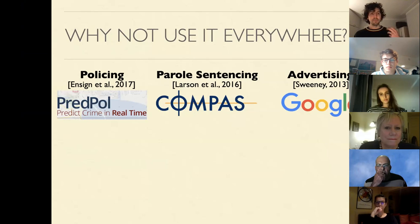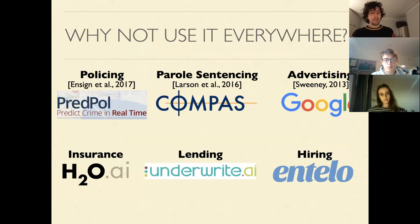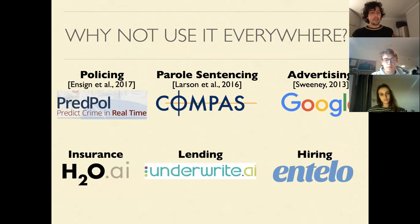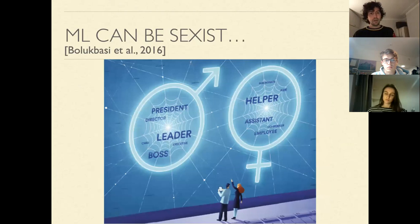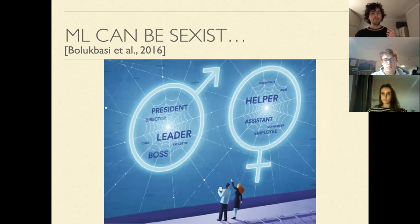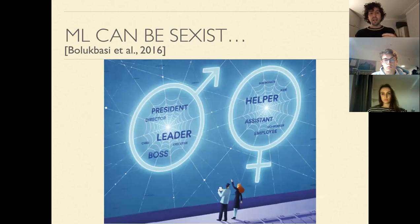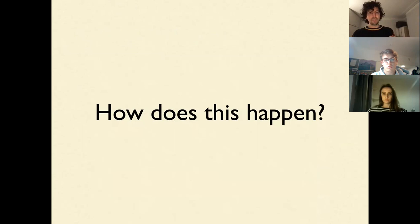So the natural question is: why not use machine learning everywhere — in policing, advertising, insurance, and lending? Well, as we've been talking about, it's because machine learning algorithms can be racist. A classic example is an HP face detection algorithm that could recognise the faces of white people while being unable to recognise the faces of black people. It can also be sexist — Bolukbasi et al. demonstrated natural associations in natural language processing methods where men were associated with words like 'leaders' and women with 'assistants.'